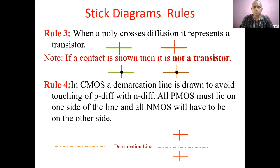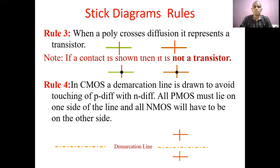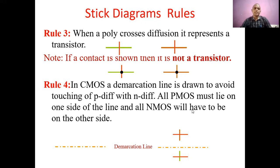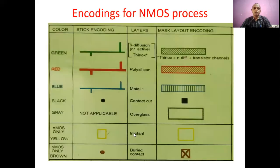The fourth rule is applicable only for CMOS circuits, because CMOS consists of P-MOS and N-MOS transistors — that is, pull-up network and pull-down network. To differentiate or isolate the P-type transistors from N-type transistors, we use a demarcation line. In a CMOS circuit, the demarcation line is drawn to avoid the touching of P-diffusion with N-diffusion. All P-MOS must lie on one side of the line and N-MOS on the other side.